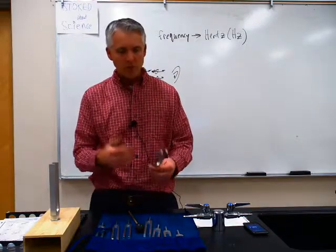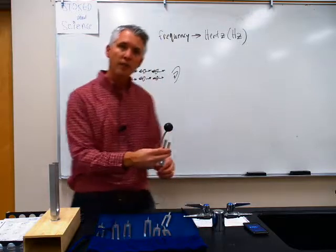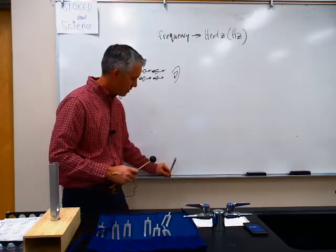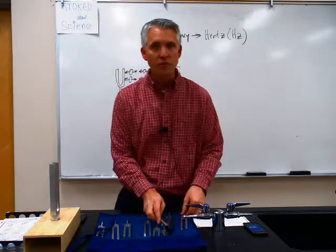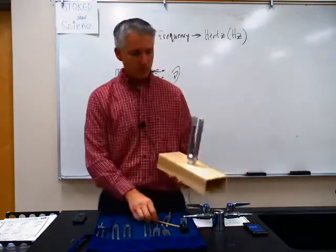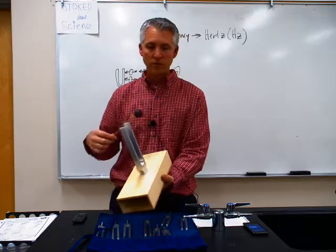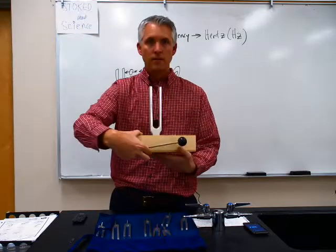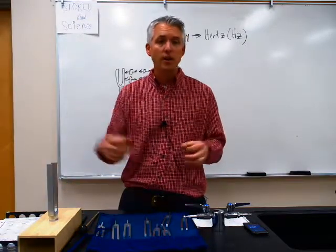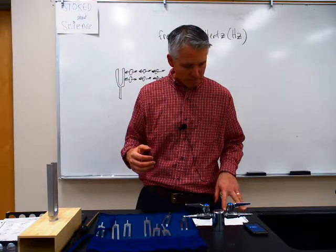Sometimes the vibration isn't all that loud, like these tuning forks. But notice what happens if I put it against something bigger — it gets a lot louder, because the bigger object starts vibrating the same way and touches a lot more air molecules, so a lot more air starts moving. This box is designed to vibrate with the same frequency as this tuning fork, which is supposed to be middle C, 256 hertz. Most musical instruments have some kind of sound box to amplify them, like a guitar body or the back wall of a piano.